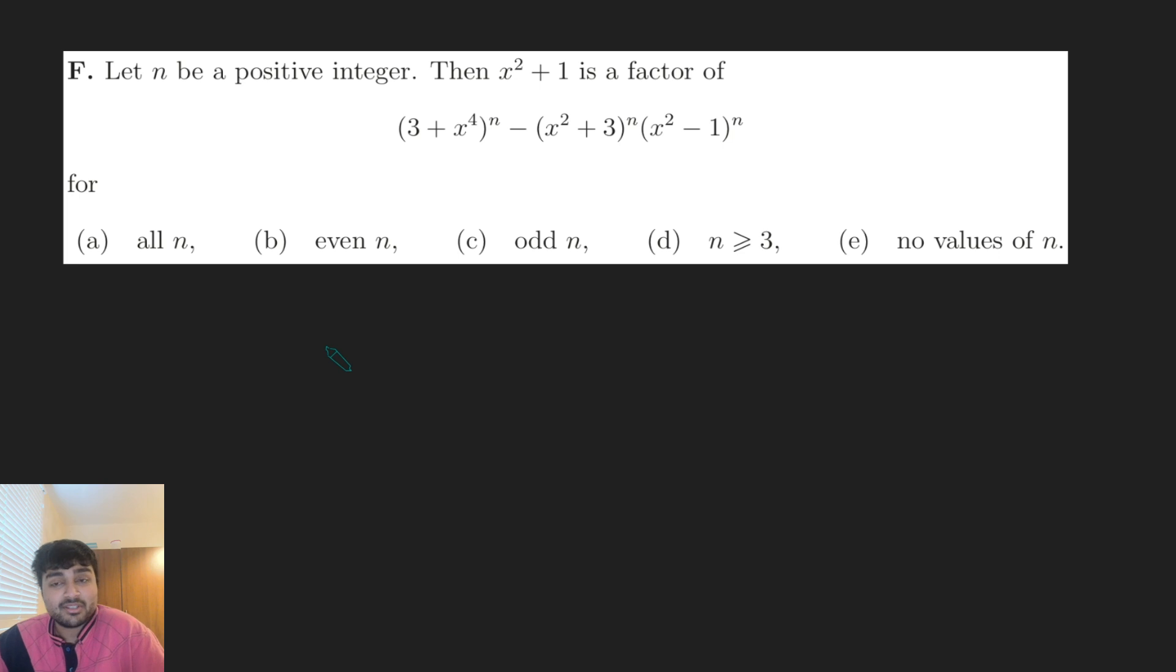There are a few ways you can solve this. I think if you had no idea whatsoever, process of elimination is a good way to go. Start from n = 1, plug it in and see if x² + 1 is a factor. If it is, you can eliminate some options. If it isn't, you can eliminate some options and do n = 2, n = 3, and so on until you narrow it down to just one option. Not super efficient, but if you have no idea what to do, that's one way you could do this.